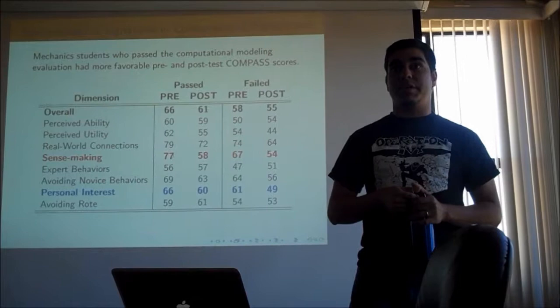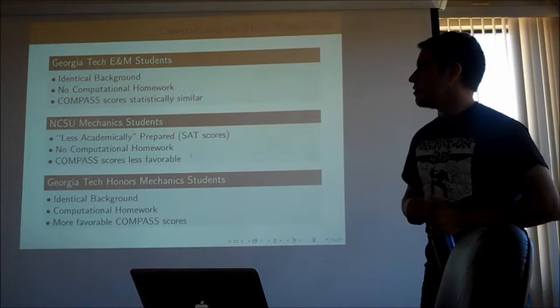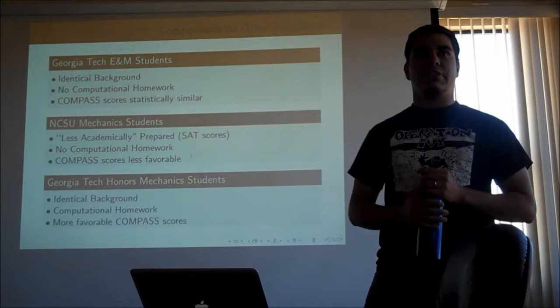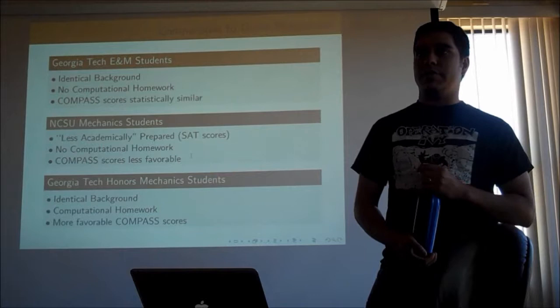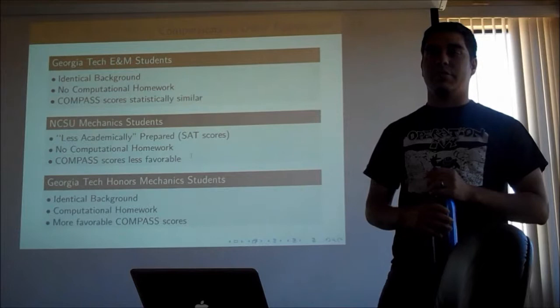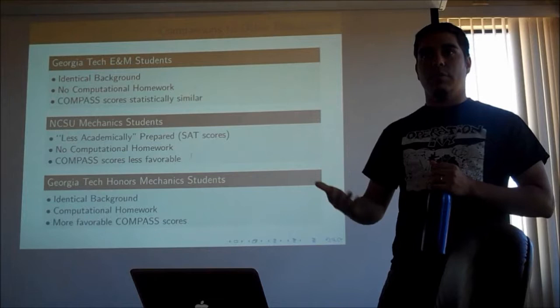We did this with other populations. With E&M students at Georgia Tech, who are not doing the computational homework, COMPASS scores are statistically similar overall and across all dimensions — which maybe speaks to how our intervention works. NCSU mechanics students have about 20% lower SAT scores than Georgia Tech students and less favorable COMPASS scores, giving a measure of academic preparedness. They're also not doing the computational homework.